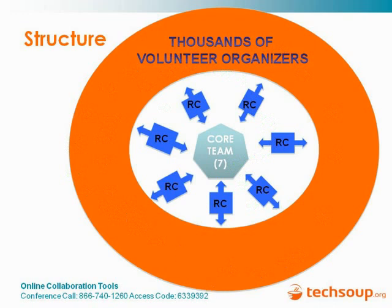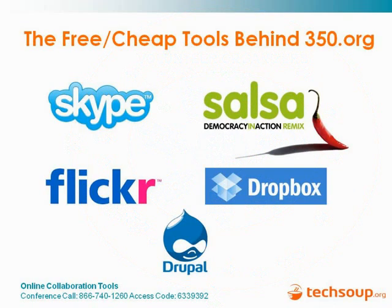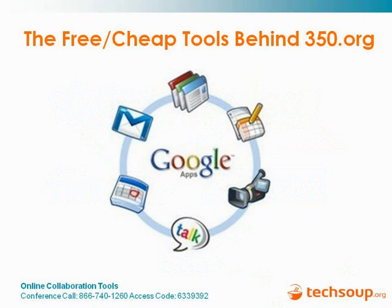To operate in such a distributed way — I'm in Oakland, with colleagues in Mexico, Spain, Washington DC, and Northern Africa — we rely on a set of tools to catalyze a wide variety of offline events. We look for tools that enable us to collaborate closely, work remotely, and stay productive while traveling. Basically, we have our entire organizational infrastructure in the cloud. We rely on Skype, Salsa, Flickr, Dropbox, and Drupal, which powers our website, plus the Google Apps Suite for nonprofits, which Jay and Ronald will speak to more thoroughly.